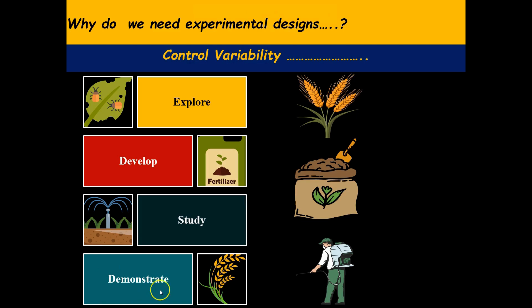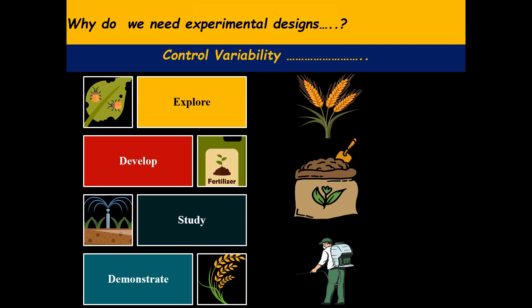We also try to demonstrate the effectiveness and practical application of specific agricultural practices or technologies to farmers, extension agents, and other stakeholders. For instance, we might conduct field demonstrations to show yield improvements achieved through adopting new crop varieties, or demonstrate the effectiveness of integrated pest management strategies in reducing pesticide use. Overall, experimental designs in agriculture or forestry help us explore innovative ideas, develop new practices, study underlying processes, and demonstrate practical applications to advance agricultural sustainability, productivity, and resilience.